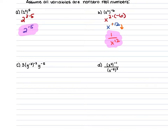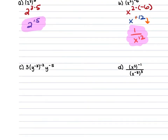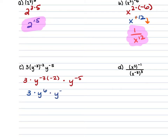For example 1c, we have 3 times y to the negative 3rd raised to the negative 2nd power, times y to the negative 5th power. We're first going to simplify y to the negative 3rd raised to the negative 2nd power — so we're doing 3 times y to the negative 3rd times the negative 2nd, times y to the negative 5th. The negative 3 times the negative 2 gives us a positive 6, so that's 3 times y to the 6th power times y to the negative 5th power.